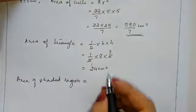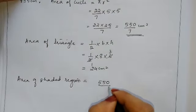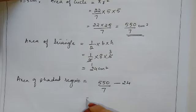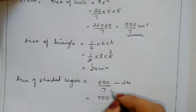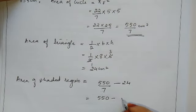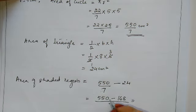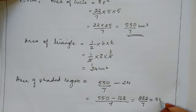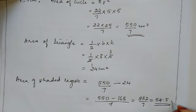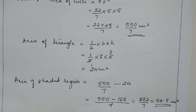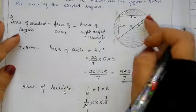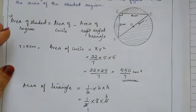Area of shaded region equals area of circle minus area of triangle, which is 550/7 minus 24. Converting 24 to sevenths gives 168/7, so 550/7 minus 168/7 equals 382/7, which is approximately 54.5 cm square. This is the area of the shaded region.